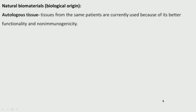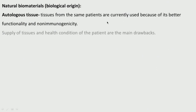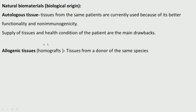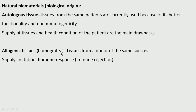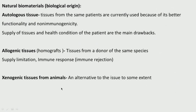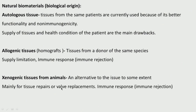Natural biomaterials are natural biological in origin. Autologous tissues — tissues from the same patient — have no immunogenicity problems, though rejection problems exist and supply is a big issue. Allogenic tissues — homografts — come from a donor; supply is again a limitation and there could be immune rejection. Xenogenic tissues come from animals as an alternative, but there could be transmission of disease. There is much current interest in using animal tissues for repair of valves and replacements, though immune rejection and disease transmission remain concerns.